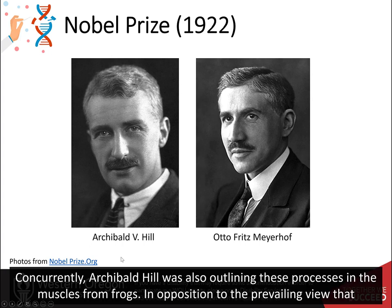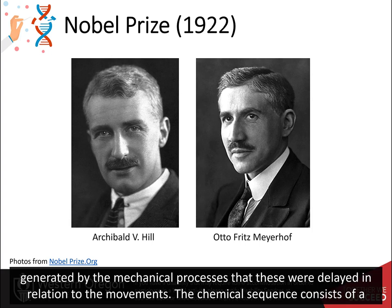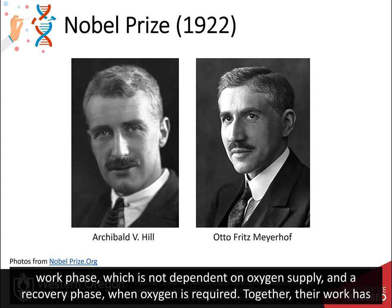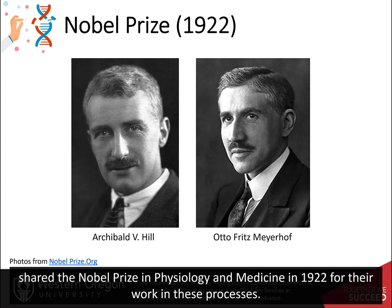Concurrently, Archibald Hill was also outlining these processes in muscles from frogs. In opposition to the prevailing view that mechanical movement and chemical processes were parallel sequences, Hill was able to show through measurements of heat generated by the mechanical processes that these were delayed in relation to the movements. The chemical sequence consists of a work phase, which is not dependent on oxygen supply, and a recovery phase, when oxygen is required. Together, their work opened the door to understanding aerobic and anaerobic metabolism, beginning with the process of glycolysis. They both shared the Nobel Prize in Physiology and Medicine in 1922 for their work in these processes.